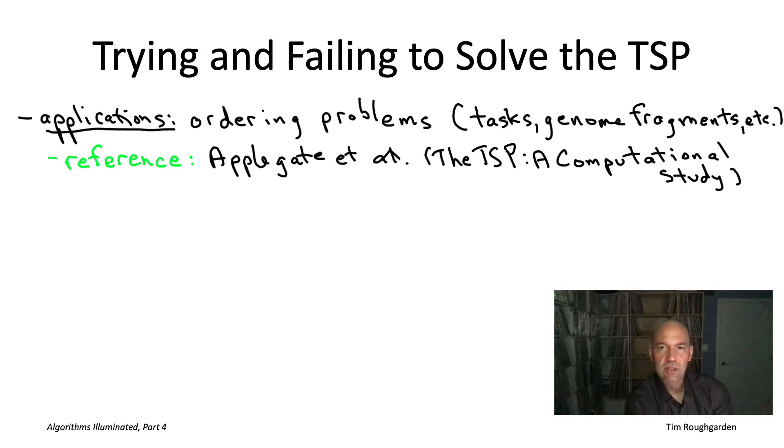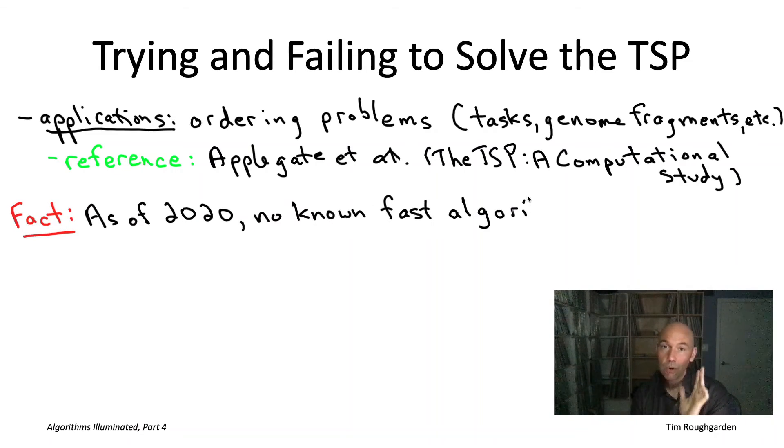So the TSP has always had a lot of natural applications and also evidently has tremendous aesthetic appeal. And so because of those two reasons, many of the greatest minds in optimization have thought long and hard about algorithms for the TSP dating back at least to the 1950s. There's been very, very serious people thinking hard about how to solve the TSP. And despite 70 years of effort, with many brilliant minds involved, at this day, currently it's 2020, there is no known fast algorithm for the traveling salesman problem. No one has yet come up with anything close to as good an algorithm as the Prim's and Kruskal's algorithms that we have for the minimum spanning tree problem.